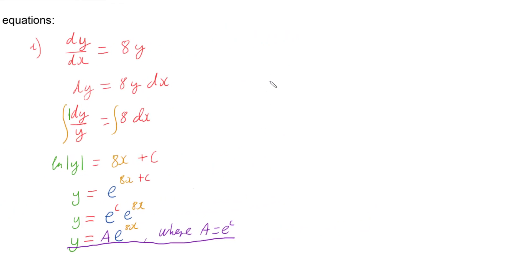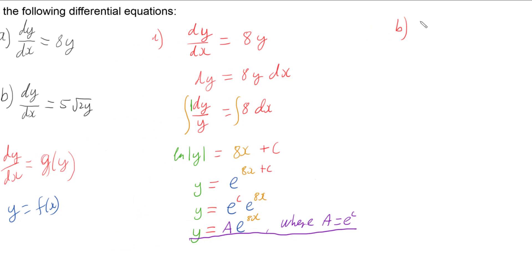So let's go and have a look now part B. Part B we have dy/dx equals 5 square root of 2y.